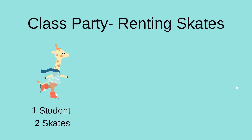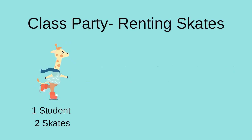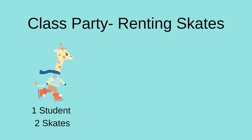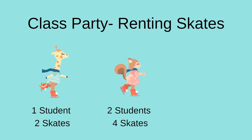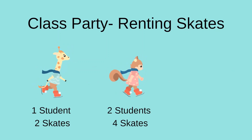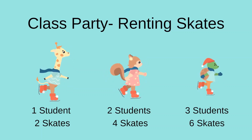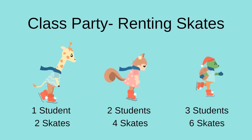Let's look at a simple example. Let's pretend this animal class is having a skating party and their teacher is looking to rent skates for everyone so they can participate. So if one student attends, they need to rent two skates. If a second student attends, they are going to need to rent four skates. Of course, if a third student attends — six skates.